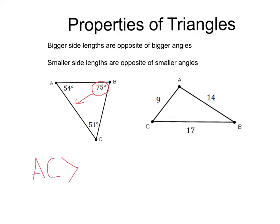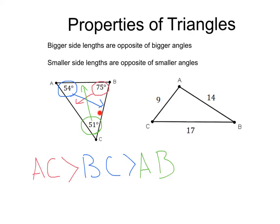We know AC is going to be greater than the next biggest side, which is opposite of 54 degrees — that's the next biggest angle — which would be BC. And BC is going to be greater than our smallest side, which is opposite of the smallest angle, which is going to be AB. We can write an inequality to show this relationship: AC is greater than BC is greater than AB. We got those by pairing them up with their opposite angles.